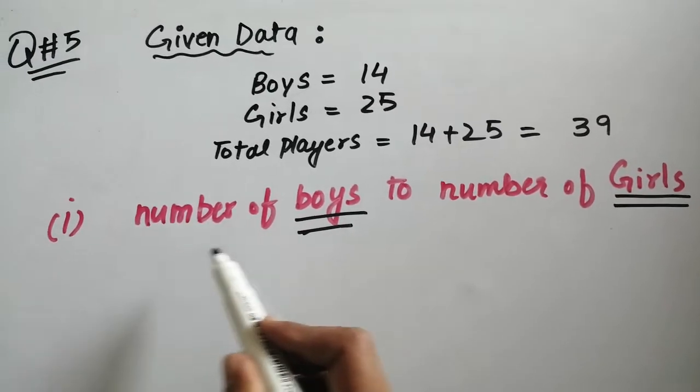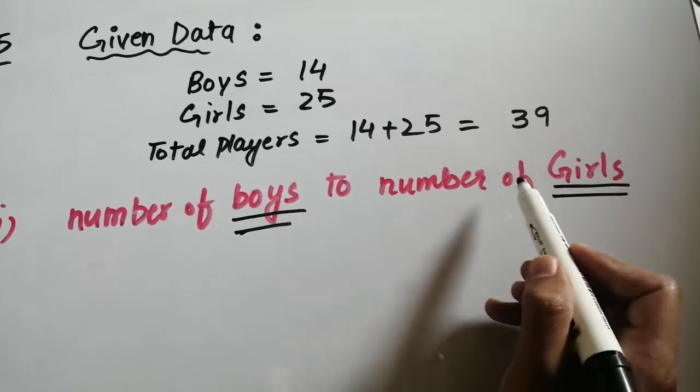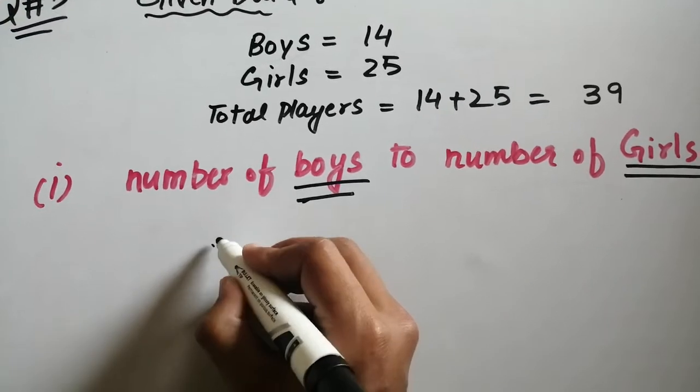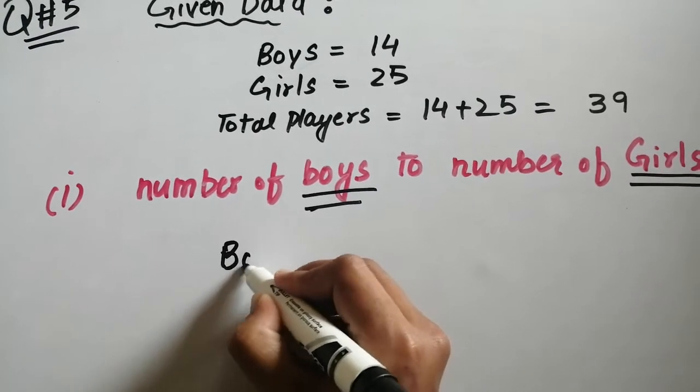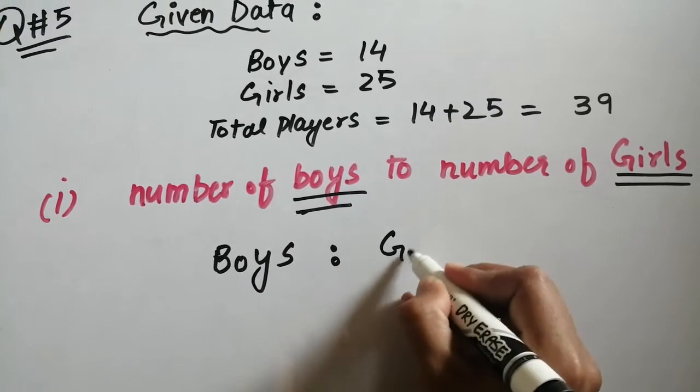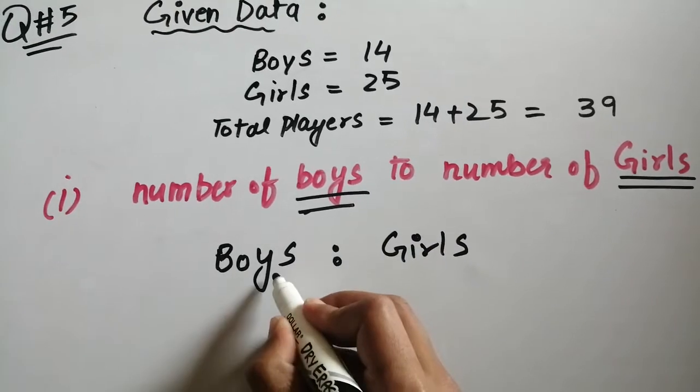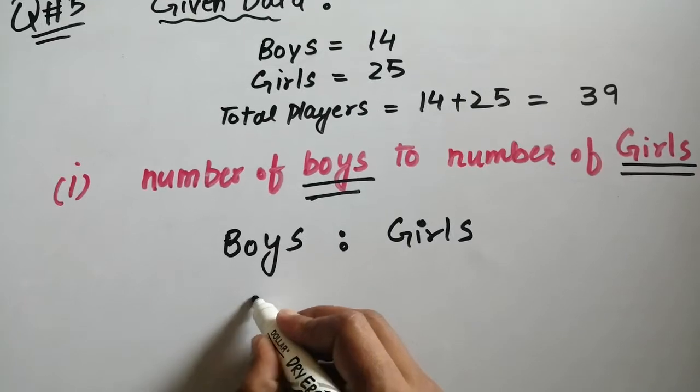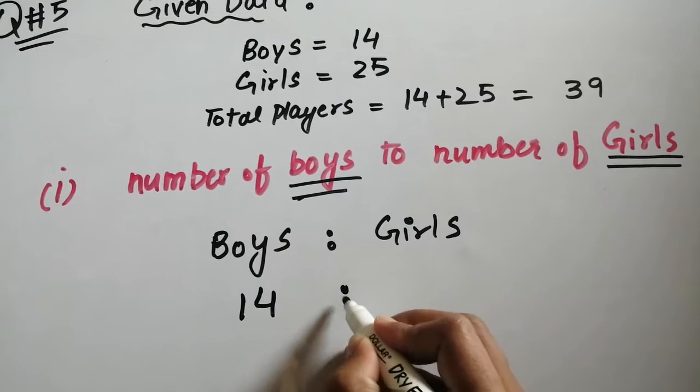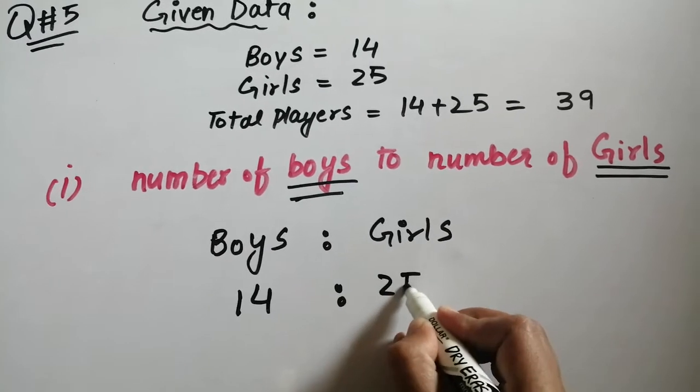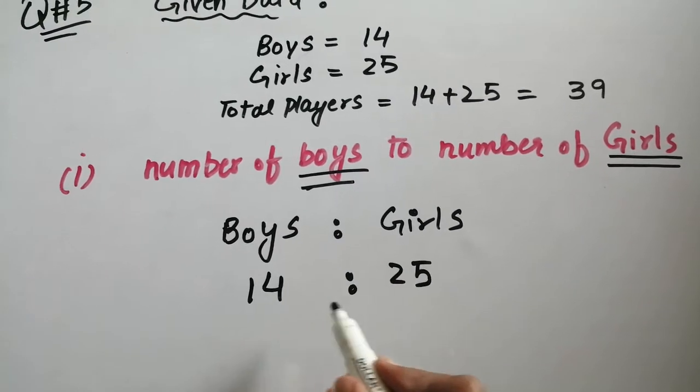The first part is the ratio of boys and girls. So the ratio of boys to girls: boys is 14, and between boys and girls, we need to find the ratio between 14 and 25.